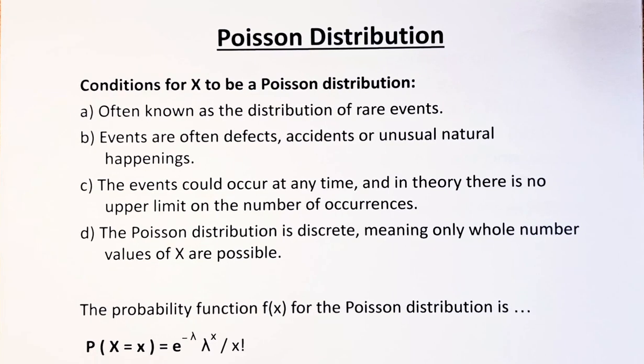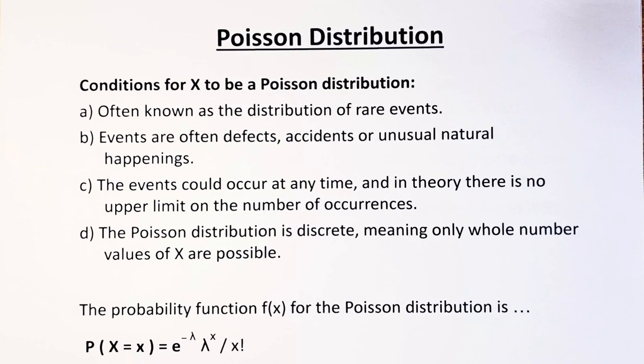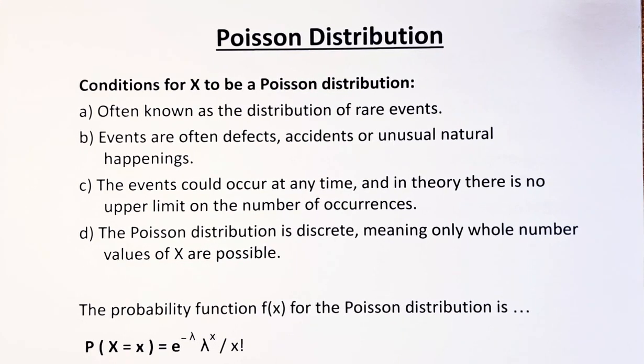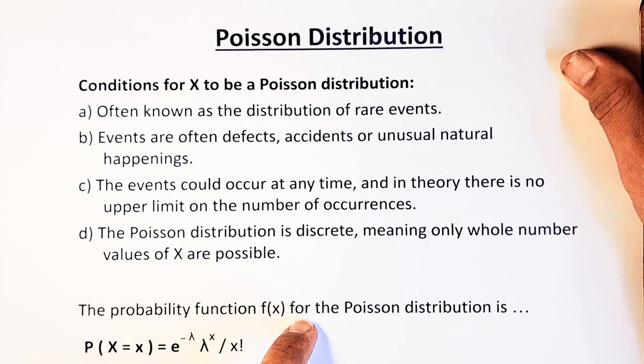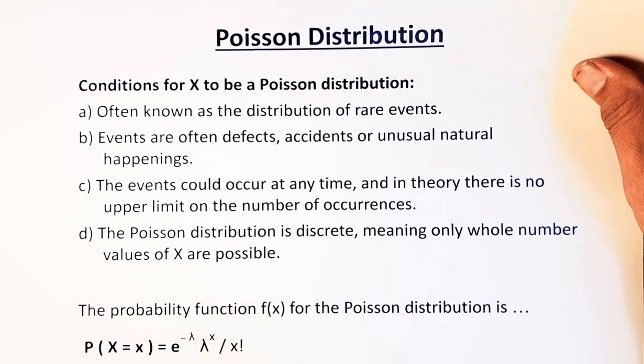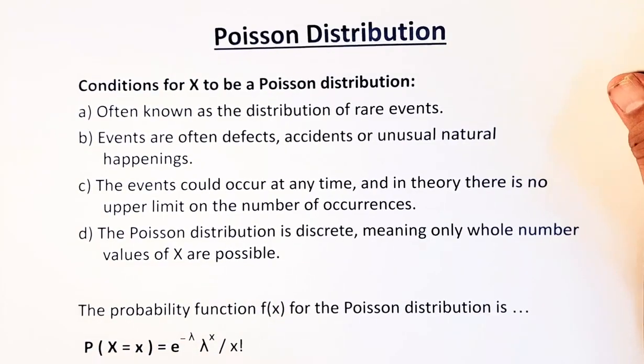The probability distribution function, or the formula to calculate the Poisson distribution, is probability of X = x equals e to the power of minus lambda, lambda to the power of x, divided by x factorial. Without further ado, let's do some examples using the graphic calculator and see how to calculate probability of a Poisson distribution.